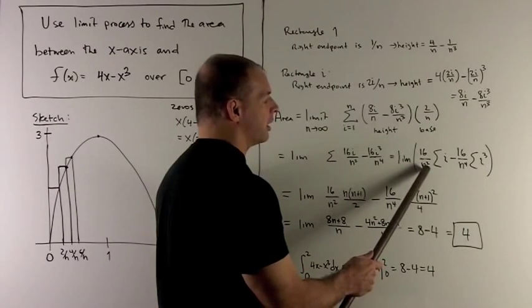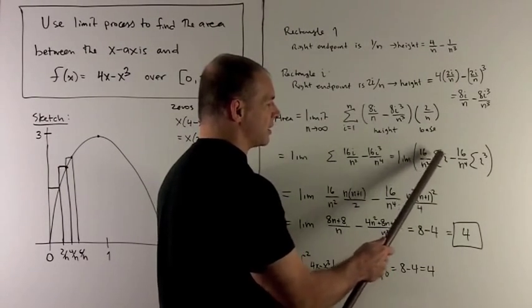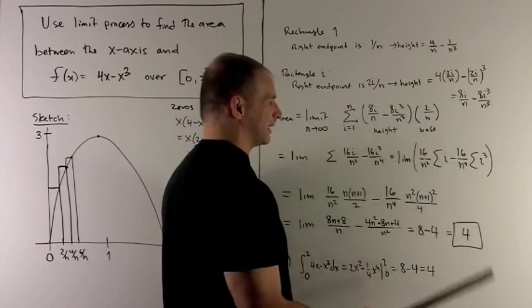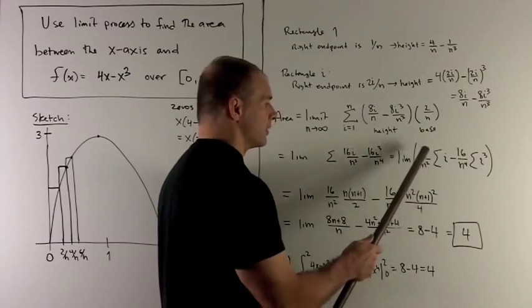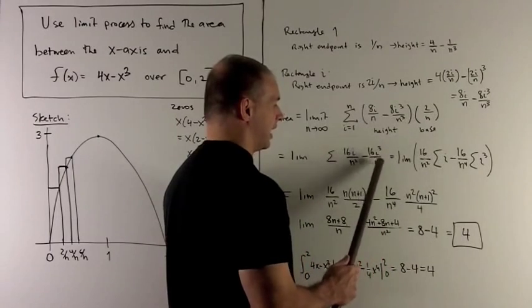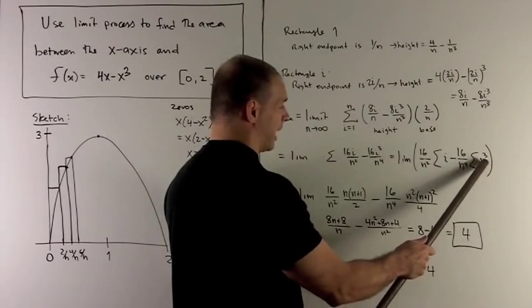So that'll give me 16 over n squared. Remember, n is a fixed number here, so I can move it outside of the summation, which is really trying to capture behavior with respect to i. So I have 16/n squared, summation i, minus, I pull out the 16/n to the fourth, leaving me with an i cubed.